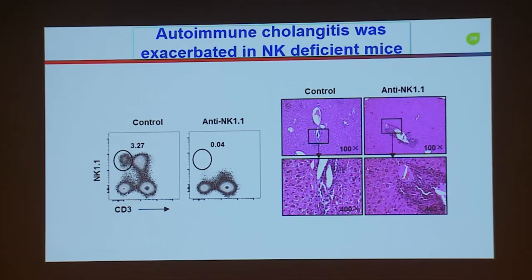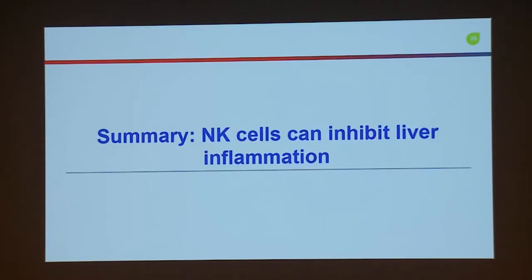We also asked what happens after disease is established and we delete NK cells. We used anti-NK1.1 antibody treatment on our model of the disease. Very clearly in the liver there was much more inflammation. In summary, NK cells can inhibit liver inflammation.